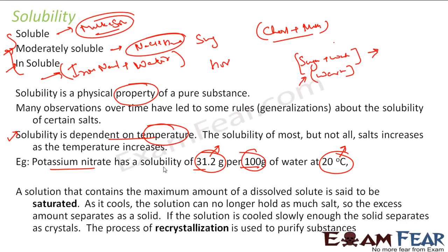A solution that contains the maximum amount of dissolved solid is called saturated. For example, if I take 100 grams of water and dissolve this much potassium nitrate, I call this saturated. But now what happens is if this is saturated and I cool it to 5 degrees Celsius, at 5 degrees this can hold only 25 grams. The extra 6.2 grams will come out as a solid, and this process is called recrystallization or precipitation.